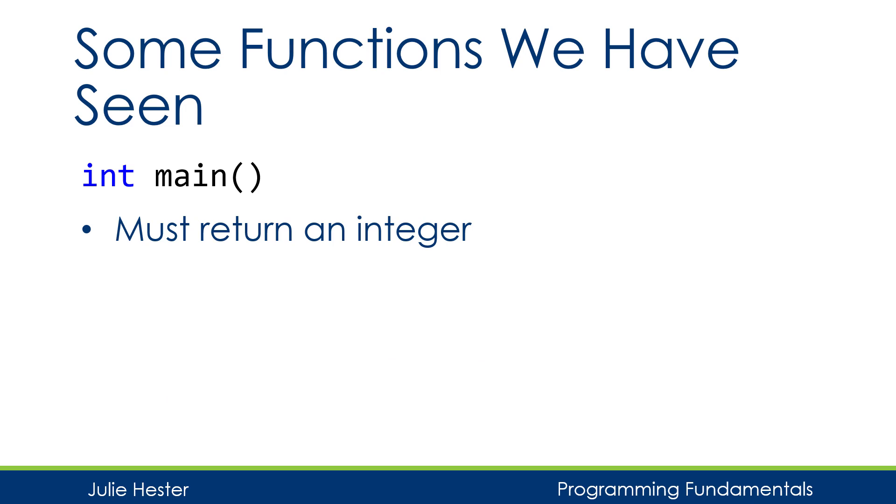So here are a couple of functions that we've seen. The first one is just main. And whenever we write a program in C++, we create a main function. And it's a function like the other functions that we're going to write. Out to the left of the word main is int for integer, and that means main has to return an integer.